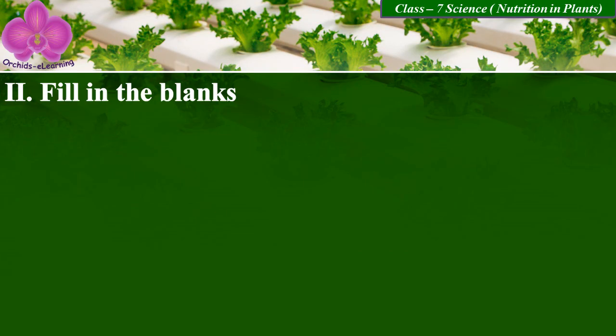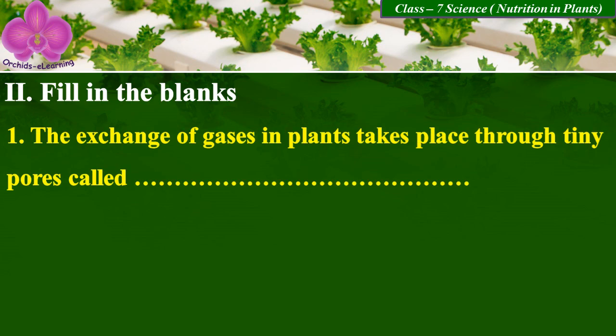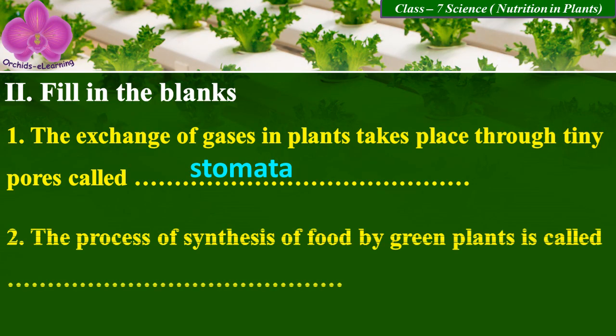Question number two: fill in the blanks. First — the exchange of gases in plants takes place through tiny pores called — stomata. Number two — the process of synthesis of food by green plants is called — photosynthesis.